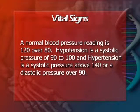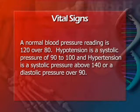A normal blood pressure reading is 120 over 80. Hypotension is a systolic pressure of 90 to 100, and hypertension is a systolic pressure above 140 or a diastolic pressure over 90.